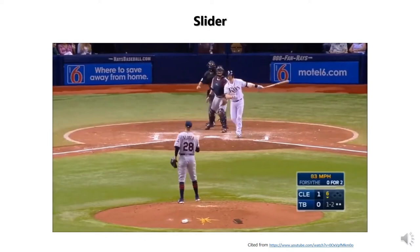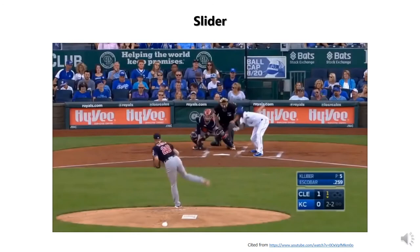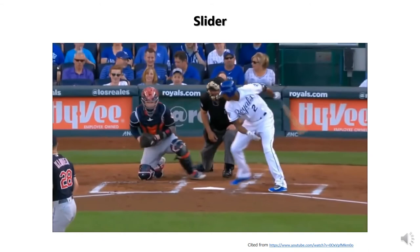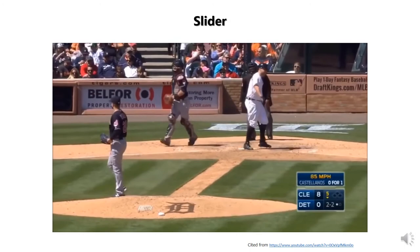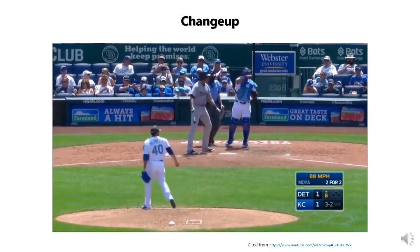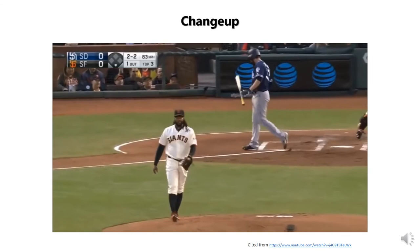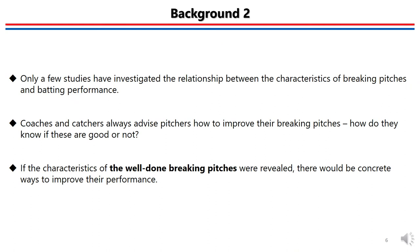Second, the slider. Sliders usually move laterally and downwards. Sliders are usually faster than curveballs, but slower than fastballs. Pitchers throw sliders mainly to force batters to miss their swing. Finally, the change-up. Change-ups are off-speed balls, usually thrown to look like a fastball, but they actually arrive much slower.